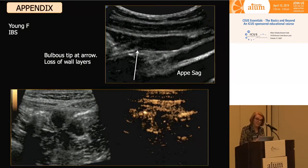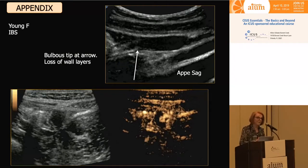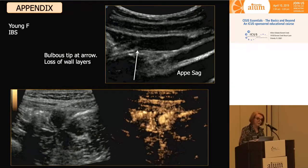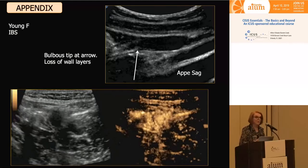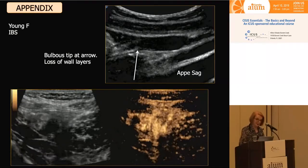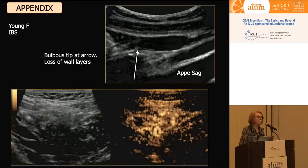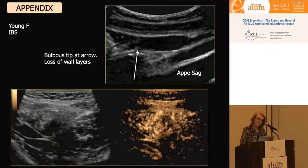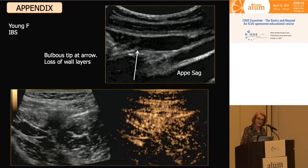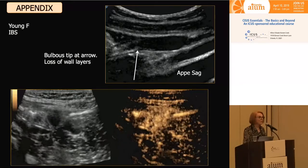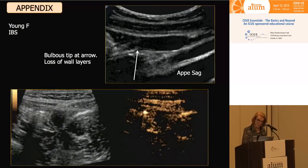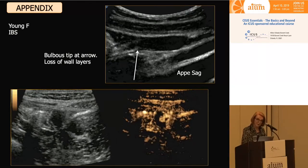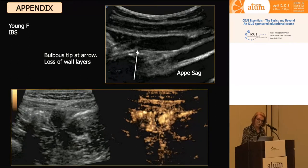This is a really fabulous case. One of my astute technologists was scanning a young female whose requisition said query irritable bowel syndrome. She said the bowel looks perfectly normal, but the appendix looks funny. She shows me the appendix with an arrow pointing to a transition point. You can see normal wall layers to the left of that arrow, while the tip of the appendix is quite featureless and bulbous — very black without retention of normal wall layers. We decided to do a contrast examination.